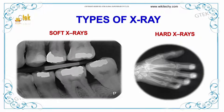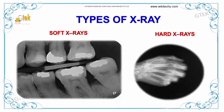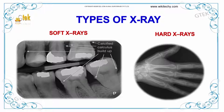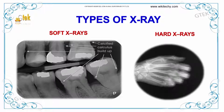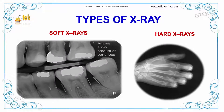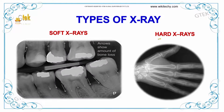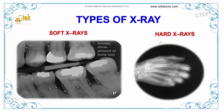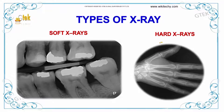Now we will talk about the types of X-rays available. Two varieties of X-rays are there: one is the soft X-rays and the other one is hard X-rays.